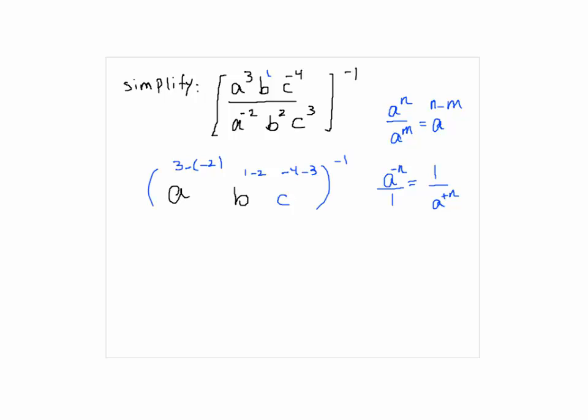So here we get A to the power of—this would be plus 3 plus 2, which is 5, B to the power of minus 1, C to the power of negative 7. The whole thing is to the power of minus 1.